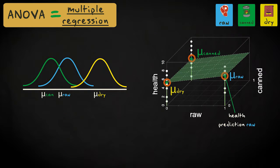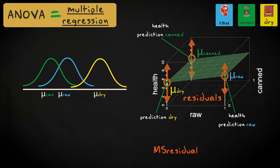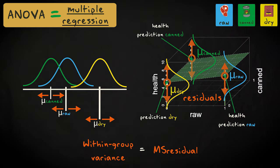In regression, the predicted health value for cats that eat raw food is the mean health score in the raw meat group. The same goes for the other groups. In multiple regression, the variation in the residuals, or prediction errors, is the variation in the observations in each group around the group mean. So the residual, or error, mean sum of squares in multiple regression is the within-group variance in analysis of variance.